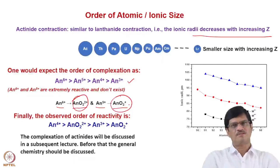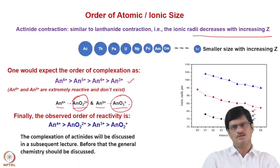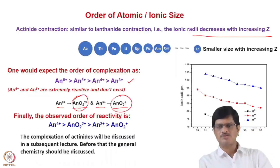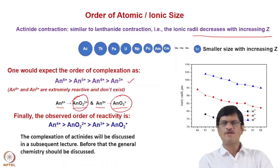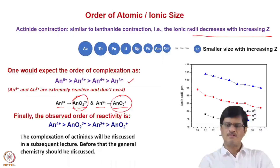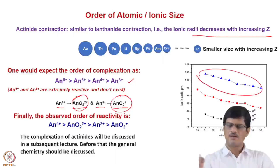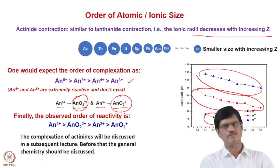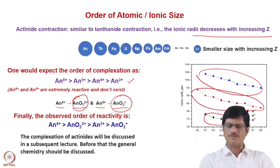Complexation of actinides will be discussed in a subsequent lecture. Before that, we will discuss the general chemistry of actinides. The figure on the right gives a comparison of the plus 3, plus 4, and plus 5 oxidation states of the actinides, showing ionic radii in picometers versus atomic number. The ionic radii continuously decrease for the plus 3 and plus 4 oxidation states, and for plus 5 there is also a decrease, though relatively less steep.